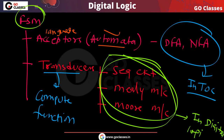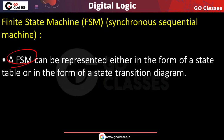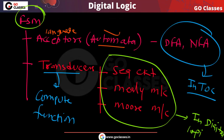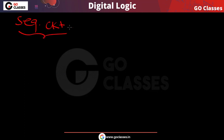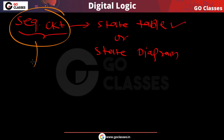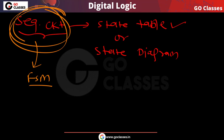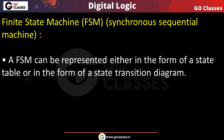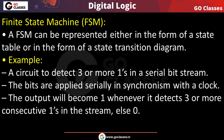Now let us see how to create a finite state machine. A finite state machine can be represented either using a table or using a diagram. If you have a sequential circuit, you can represent its behavior using a state table or a state diagram. Since a sequential circuit is a finite state machine (it has a finite number of states), a finite state machine can also be represented using a state table or a state diagram.